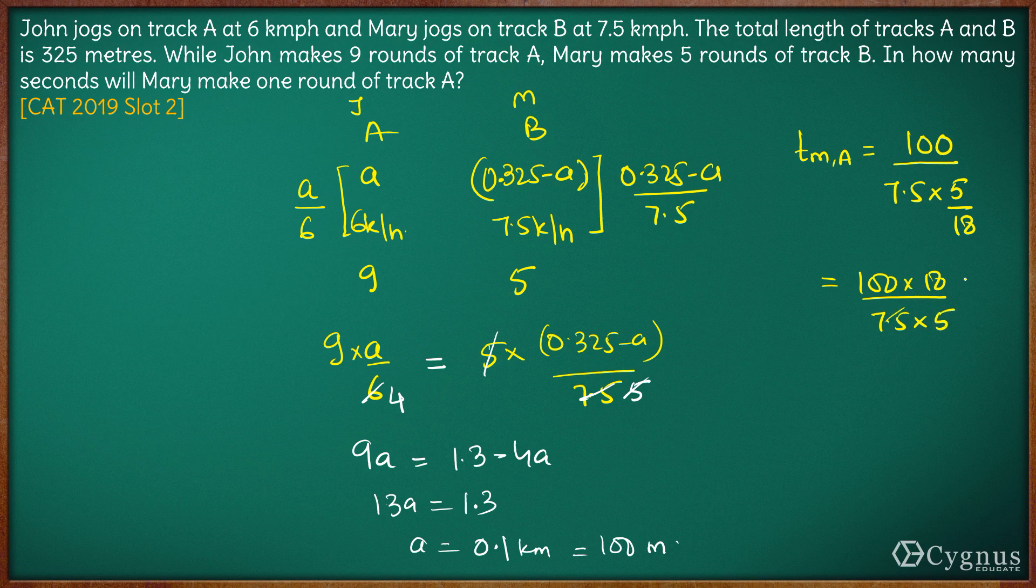This goes, we have another 10 over here. 10 by 5 is 2. 100 upon 75. This goes by 25 three times, this goes by 25 four times. 18 by 3 is 6. 4 into 6 is 24. 24 into 2 is 48 seconds.